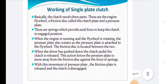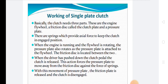Now, the working of single plate clutch. Basically, the clutch needs three parts: the engine flywheel, the friction disc called the clutch plate, and the pressure plate. Springs provide axial force to keep the clutch in the engaged position. When the engine is running and the flywheel is rotating, the pressure plate also rotates as it is attached to the flywheel. The friction disc is located between the two. When the driver pushes down the clutch pedal, the clutch is released — this forces the pressure plate to move away from the friction disc against the force of the springs. With this movement of the pressure plate, the friction plate is released and the clutch is disengaged.